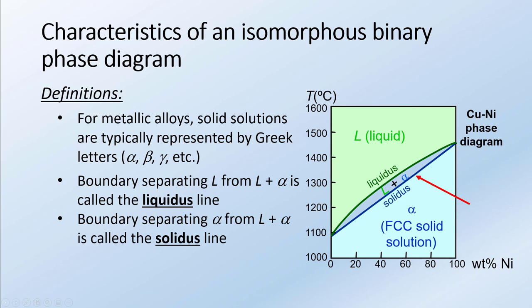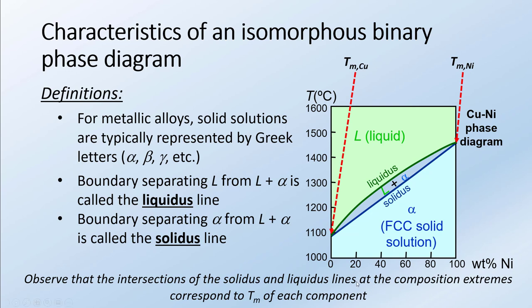Another characteristic of these isomorphous binary phase diagrams is that the extremes on the x-axis — at 0 and 100 percent — if we look at the intersection of the solidus and liquidus lines, that actually corresponds to the melting temperature. If we have pure copper and we raise the temperature to its melting point, it's going to convert from its FCC solid state to its liquid state. Similarly, if we have a pure nickel solution, we raise the temperature until it finally melts. So it's not surprising that the extremes of the phase diagram represent the melting temperature of each component.